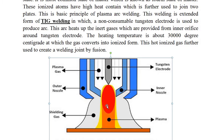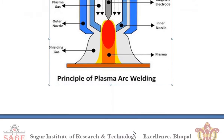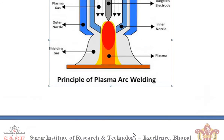Looking at the diagram, there are plasma gases supplied through the inner nozzle, which sprays the gases. There is also an outer nozzle, through which the shield gases come. The shield gases surround the plasma. This plasma is then used for the welding operation.